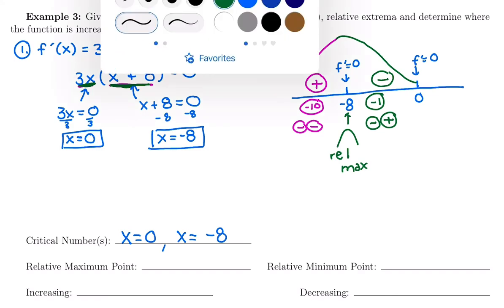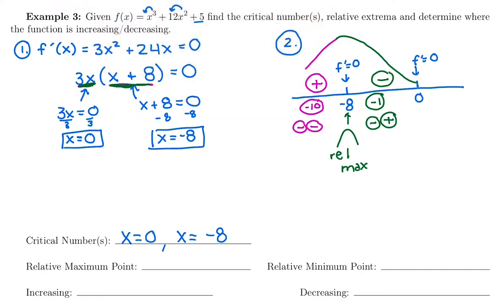And then I just need to finish off this sign chart to see what else is happening. So plugging into the derivative again, I need to choose any number after 0. So maybe I'll choose a positive 10. I'd have 3 times 10, which is positive. And then 10 plus 8, which is positive. So 2 positives are going to multiply to be a positive. And we're going to be increasing then from our positive derivative. So at 0, we went from decreasing to a 0 derivative to a positive derivative. So we get a relative min.